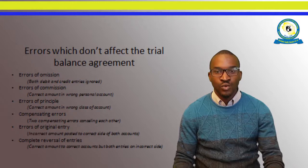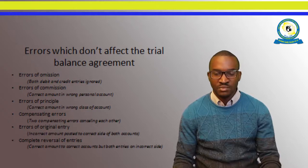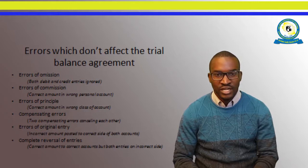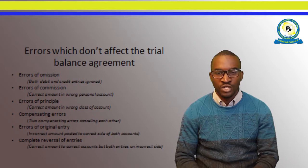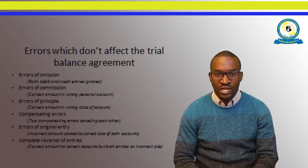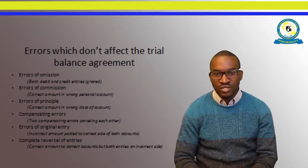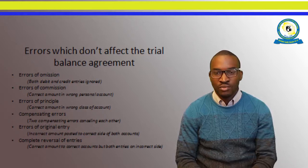Now coming to errors which do not affect the balancing of the trial balance — the trial balance will look perfect and balanced, but actually there are errors in it. These errors include errors of omission, errors of commission, errors of principles, errors of original entries, and errors of complete reversal. For errors of omission, both debit and credit entries have been ignored. If you have ignored an entry in both debit and credit, there will be no change in the trial balance — the trial balance will still balance.